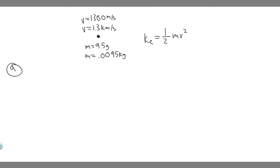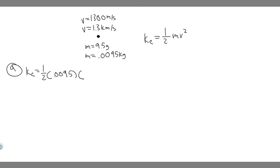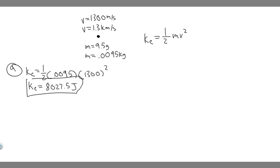Now we've got the correct units, so we just plug in. For A, the kinetic energy is 0.5 times the mass, 0.0095, times the velocity squared, so 1,300 squared. That gives us 0.5 times 0.0095 times 1,300 squared. The kinetic energy equals 8,027.5 joules. You can round to 8,000 or however you prefer, but that's your answer to A.